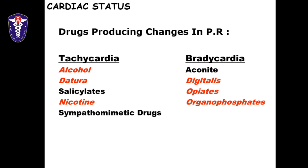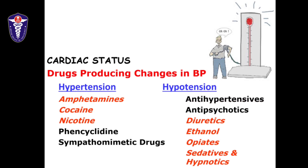What are the drugs which can affect blood pressure? For hypertension, common drugs include cocaine, nicotine, and amphetamines. For hypotension, you can remember diuretics, ethanol, opiates, sedatives, and hypnotics — and also, as common sense suggests, overdose of antihypertensives and antipsychotics. That covers heart rate and blood pressure.